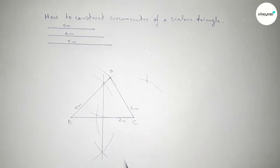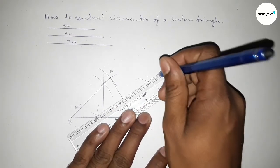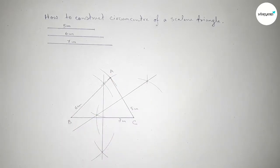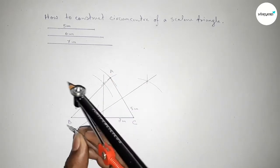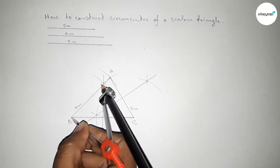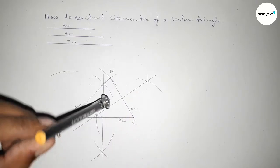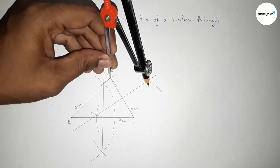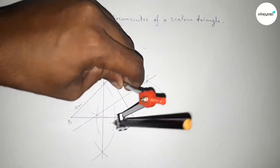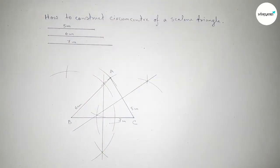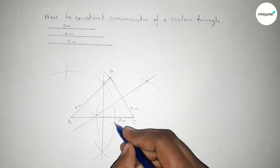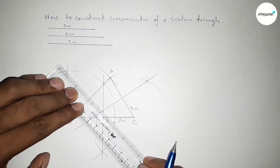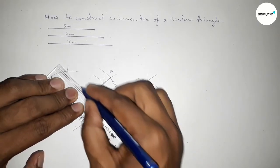Next, we have to bisect the line AB. Putting the compass at one end and taking greater than half of AB, drawing an arc. With the same length, cutting arcs on both sides so both curves intersect at two points. Now joining this bisector line.